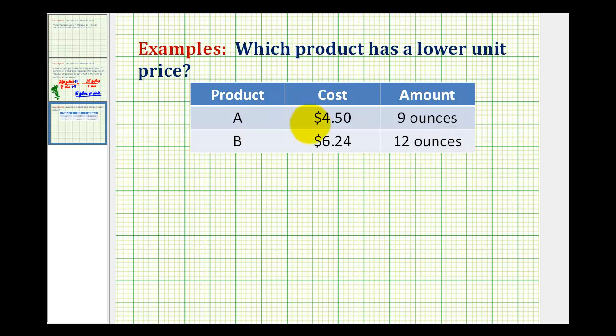So we'll start by writing the given information as a rate. So for product A, the rate is $4.50 per 9 ounces. And for product B, it's $6.24 for 12 ounces.